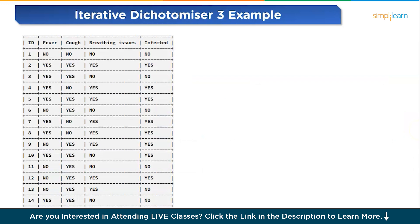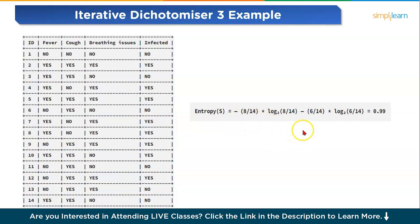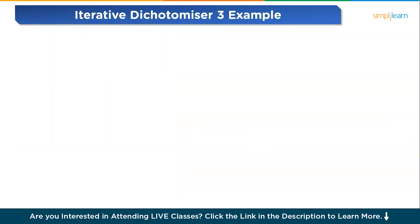Now moving forward, as stated previously, the first step is to find the best feature — that is, the one with the maximum information gain. We will now calculate the information gain for each of the features, but first we need to calculate the entropy of S. From the total of 14 rows in our dataset S, there are 8 rows with the target value yes and 6 rows with the target value no. The entropy of S is calculated from these values, giving approximately 0.99.